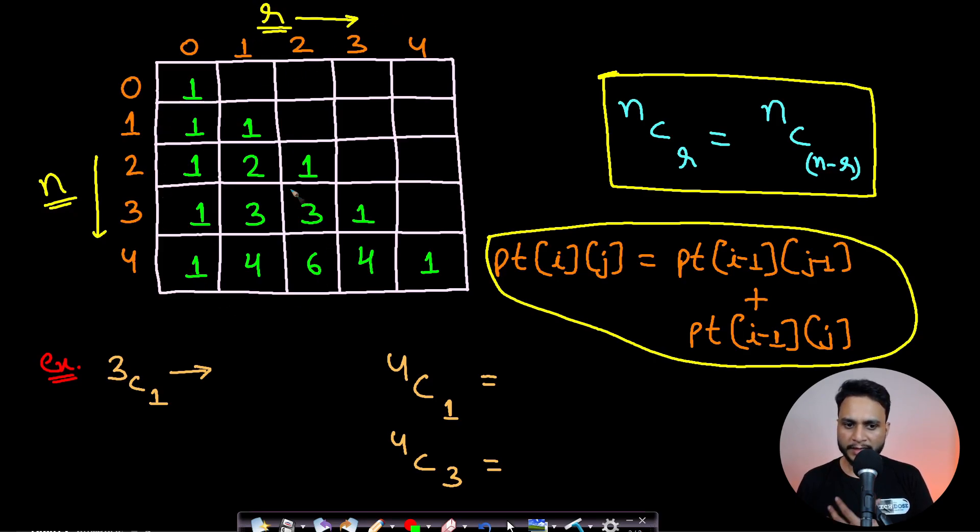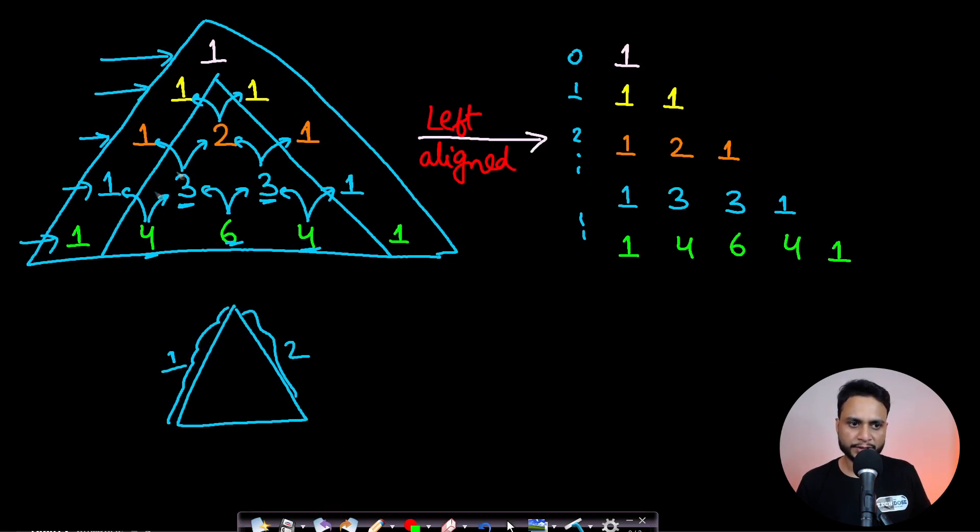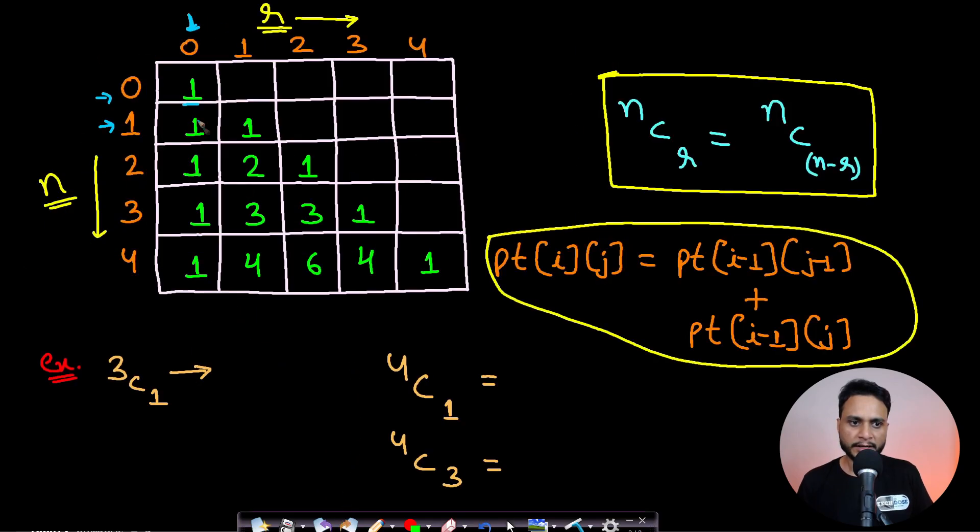How do we calculate all these values? These first two rows are the base cases. The first column is the left side boundary of this triangle, and you will see this is the right-hand side boundary. These two have to be one all the time.